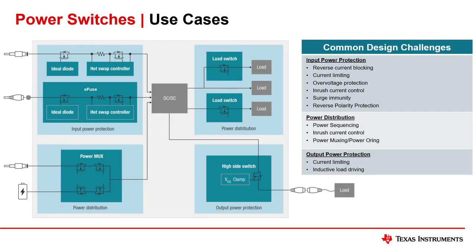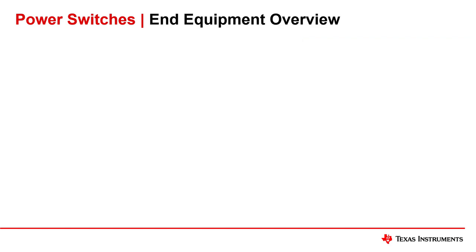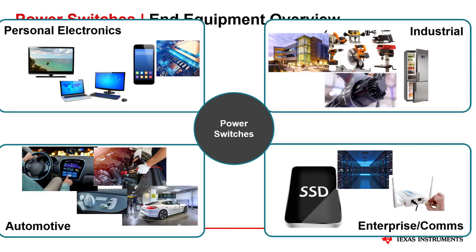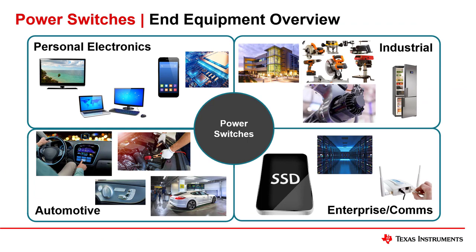A power switch provides power distribution and protection features that enables engineers to develop robust electronic systems. They can range from a load switch for simple on-off functionality to an e-fuse with many cutting-edge protection features. One of these protection features is reverse polarity protection. An e-fuse does this by integrating protection features to monitor the V-in and V-out for negative voltage and blocking reverse current. Power switches are used in computers, phones, refrigerators, cars, factories, and many other end equipment.